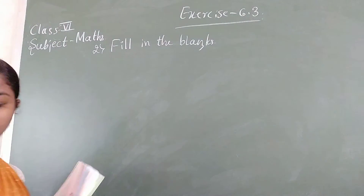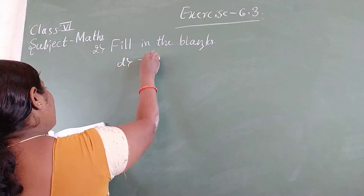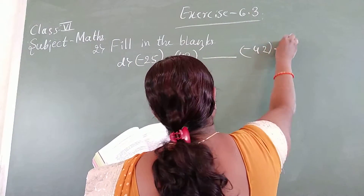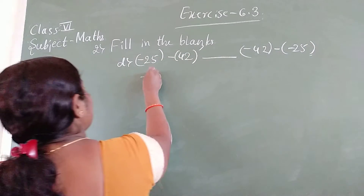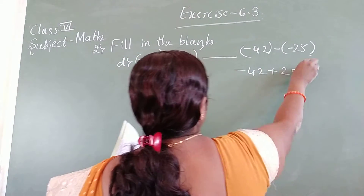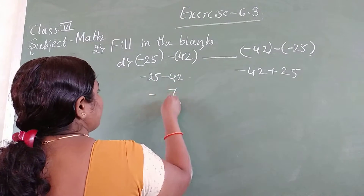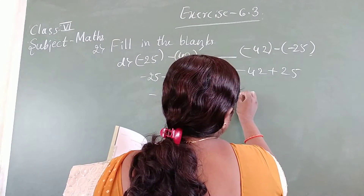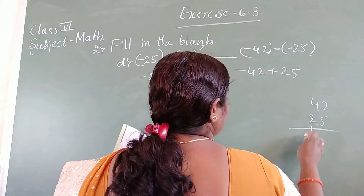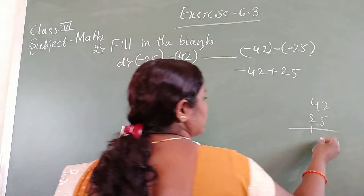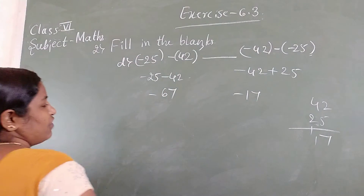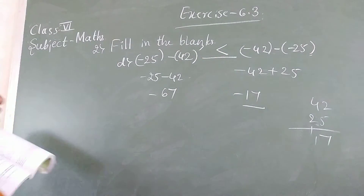Part D: minus 25 minus 42, dash, minus 42 minus minus 25. Minus 25 minus 42 — both minus, add: minus 67. Then minus 42 minus into minus gives plus 25, so minus 42 plus 25: different signs, subtract — 42 minus 25 equals 17. Minus 17 is bigger than minus 67.